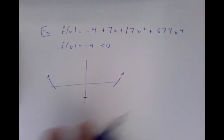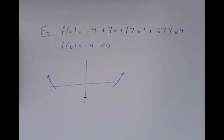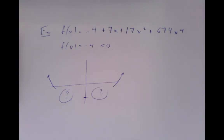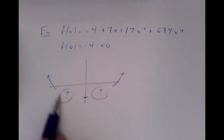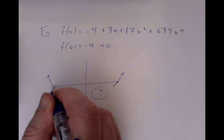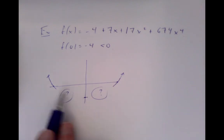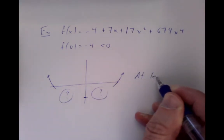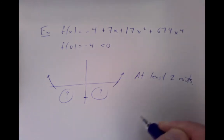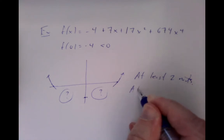We don't know what happens in the mysterious middle regions. Let's see if we can come up with a more sophisticated technique to figure out more. We can at least say we know there is a root here somewhere and a root there somewhere, so there are at least two roots. And because the degree is four, there are at most four roots.